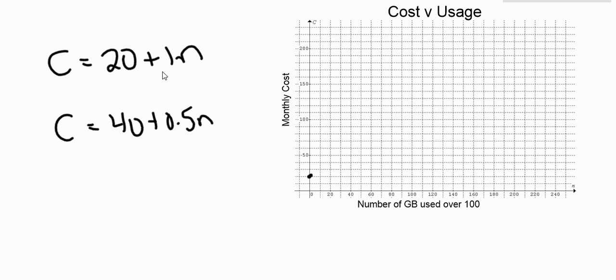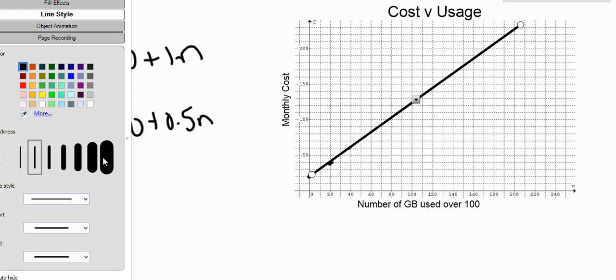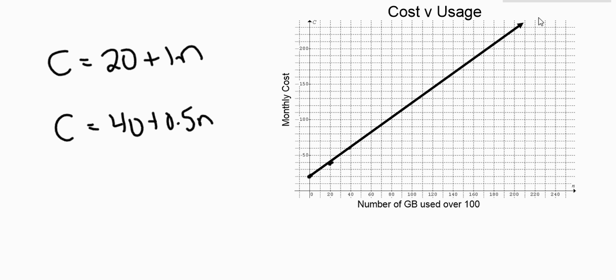The first one starts at 20, and then every gigabyte used over 100 cost me a dollar. So if I use 20 gigabytes extra, I need to pay $20 extra, right about here. If I use another 20, I need to pay another $20, and so on. So that would create a line. Let me grab my line tool here. So that would create a line. Let's see if I can line this up nicely, like this. And using my fancy tools here, I can be really smart. I'm going to put an arrow on the end of that line, because that's what we do.